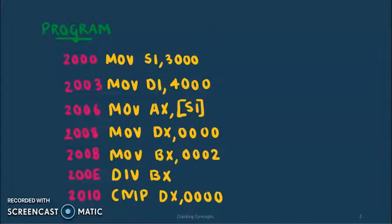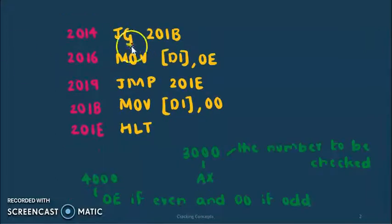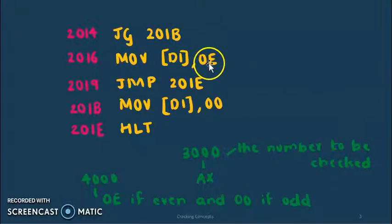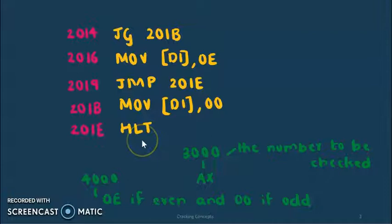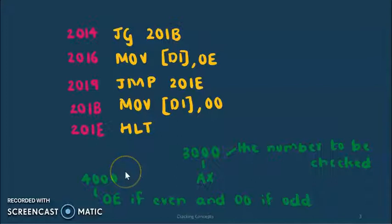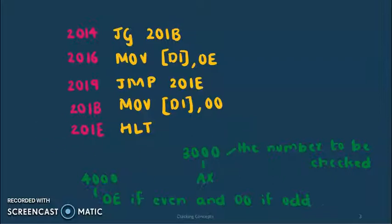If the value of DX is 0 then this jump is skipped. This is a 2-byte instruction so the next line of code is at 2016, where we'll store the value 0E to the location pointed by DI, meaning the number is even. This is a 3-byte instruction so the next line of code is at 2019, where we'll jump to location 201E where the program halts. Note that at location 3000 we store the number to be checked, and at location 4000 we store the result: 0E if even and 00 if odd.